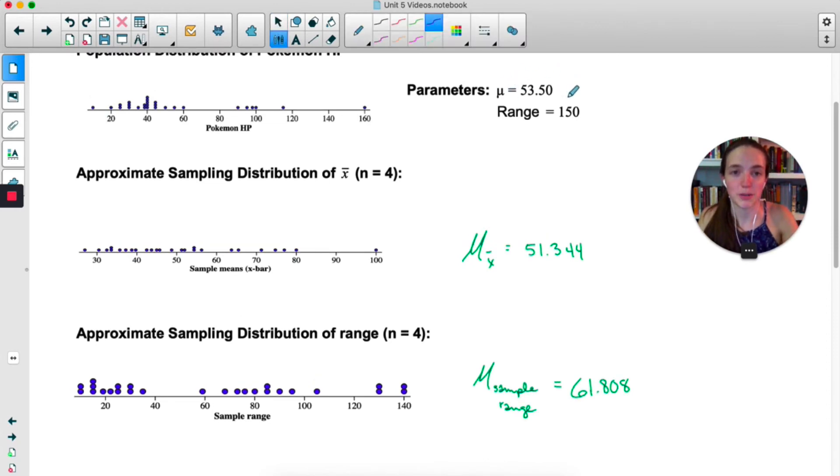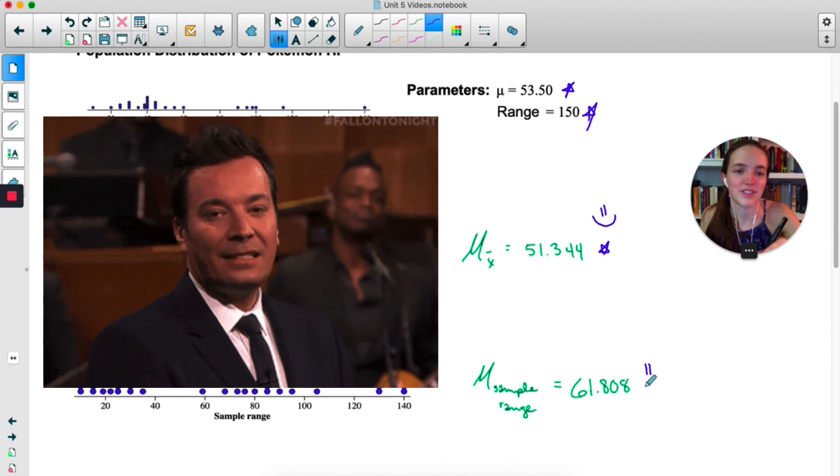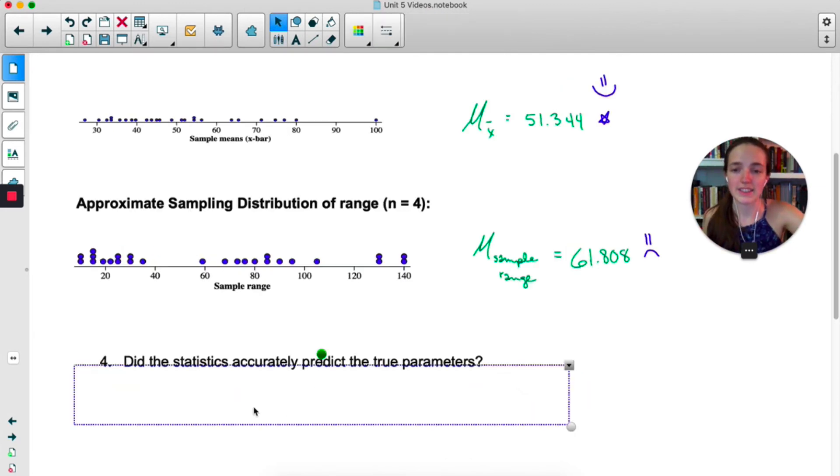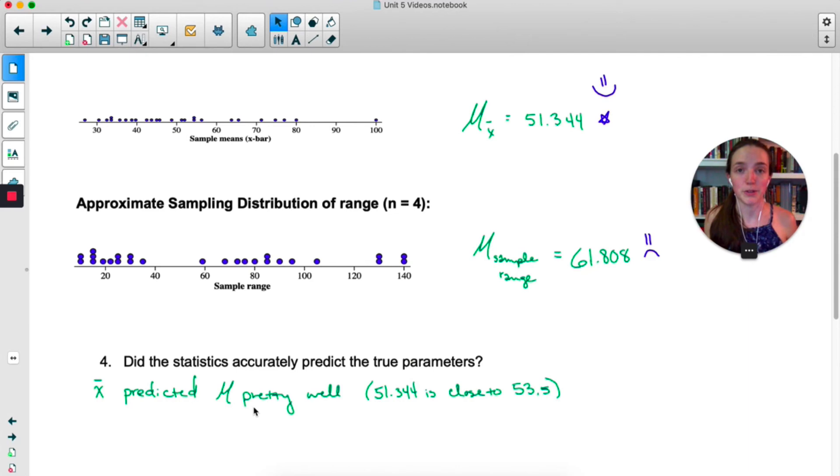So let's just compare these parameters. The original mean, the true mean of the entire population is 53.5. That's not that far away from 51.34. This is actually pretty good, a pretty good estimate of mu. The range on the other hand, the true range from the entire population was 150, and not great. So the sample range did not represent the true range very well. Now in both of these cases, we're using x-bar and range as estimates of a true parameter. Sometimes you see it referred to as a point estimate.